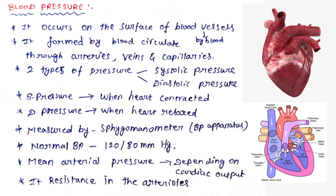Systolic pressure is formed when the heart is contracted, and diastolic pressure is formed when the heart is in a relaxed state. The normal blood pressure is 120/80 mmHg, where 120 is the systolic pressure, 80 is the diastolic pressure, and mmHg is the unit of measurement.